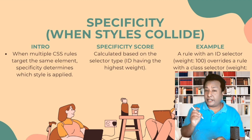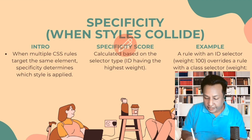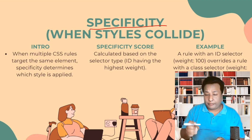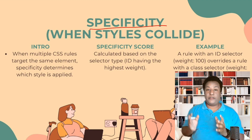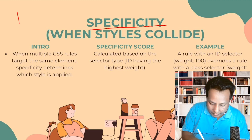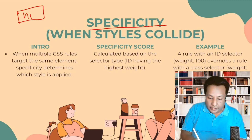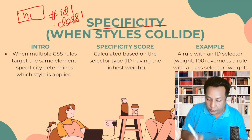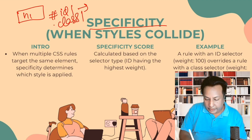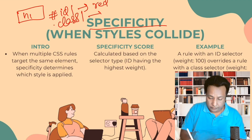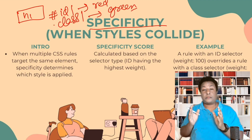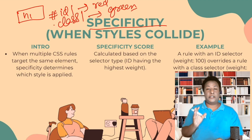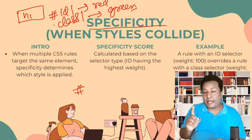Experienced developers may get confused on the topic called specificity. Suppose you have an element with both a class and an id applied. For example, you have an h1 with an id of 'id1' and also a class of 'class1'. The id says the color of h1 should be red, and the class says it should be green. Which style will apply to the h1 element?